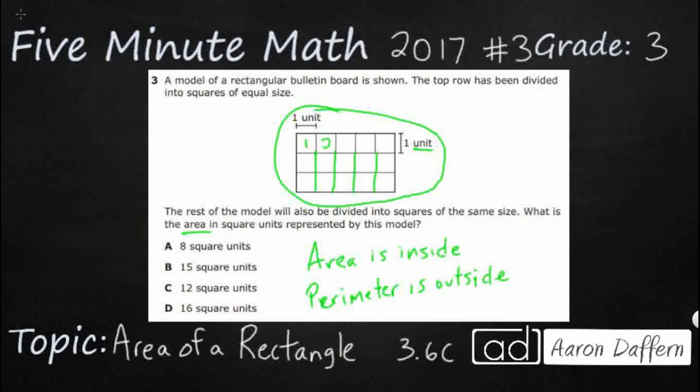They've already got the rows up there. So let's just label these: 1, 2, 3, 4, 5, 6, 7, 8, 9, 10, 11, 12, 13, 14. So I've got 15 square units.